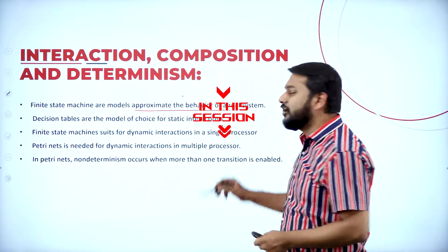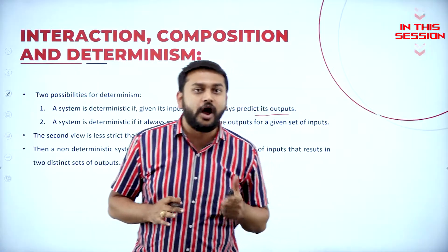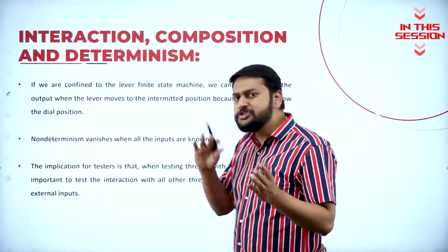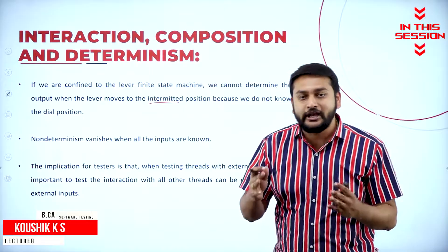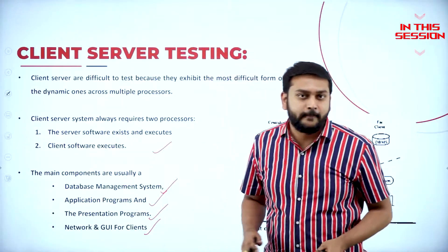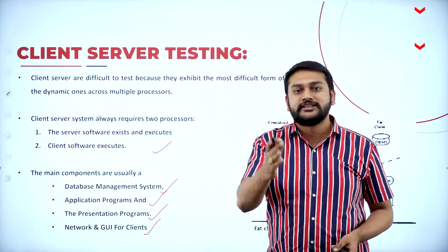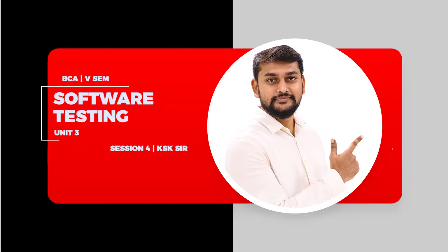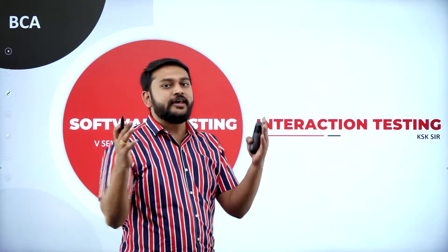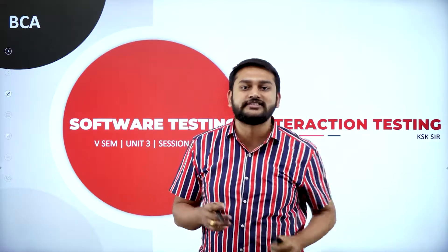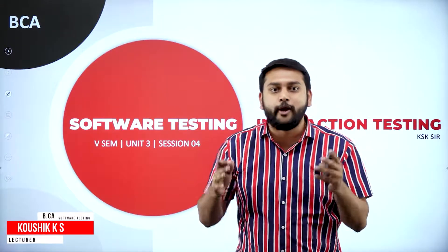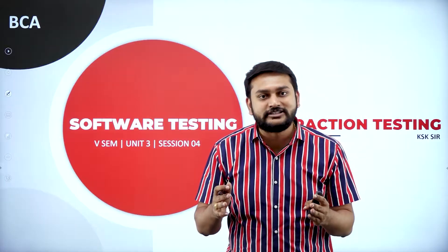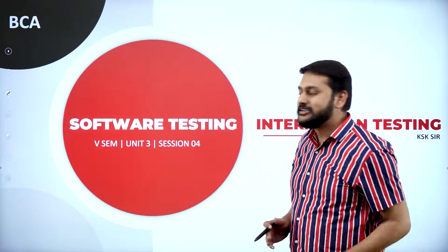Hello everyone, I welcome all of you to this very interesting session — the last session on interaction testing. In this session I will be discussing two important points: determinism and client-server. The finite state machine gives me the approximate behavior of the real system, but I cannot predict the output, so I will call that non-determinism. The windshield wiper problem is a good example — when it reaches the intermittent position it is very difficult to predict the output.